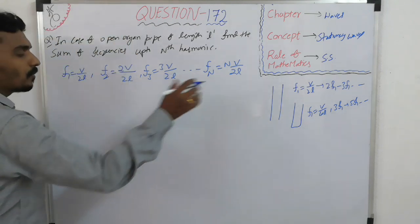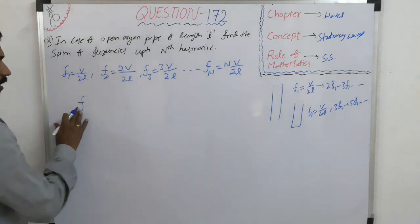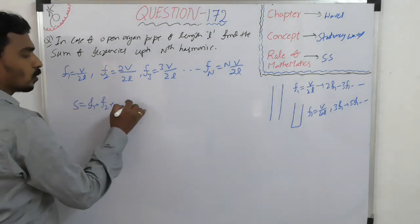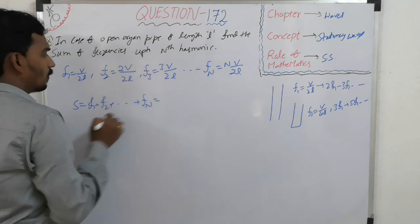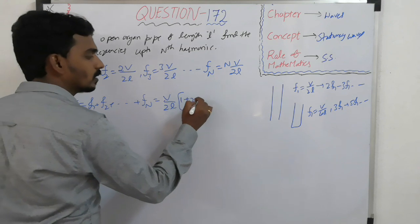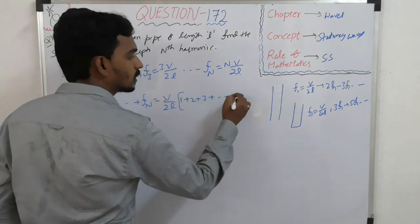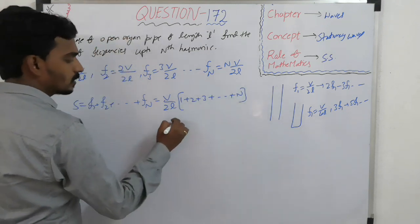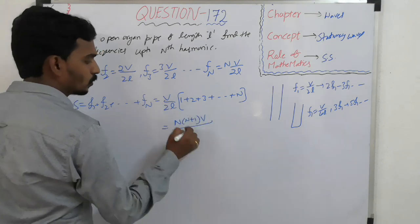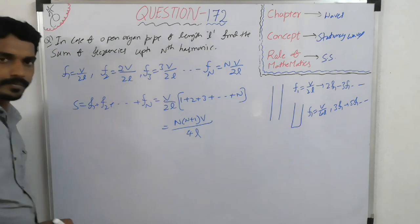Then, you have to find the sum of all these frequencies. The sum equals F1 plus F2 and so on to Fn, where V by 2L is common in all of them. If you take it common, you get 1 plus 2 plus 3 and so on to n. Sum of natural numbers is n into n plus 1 by 2. Two into two is four in the denominator.